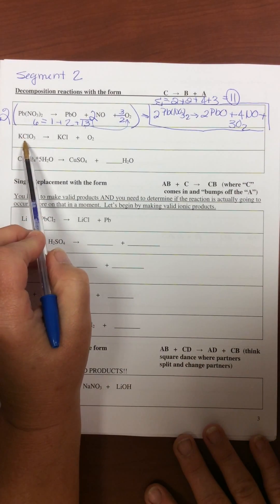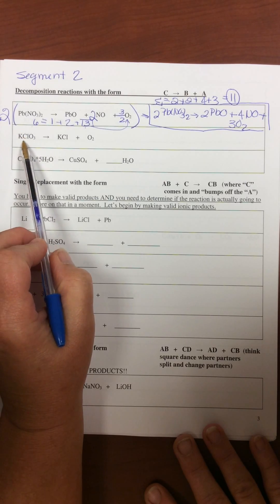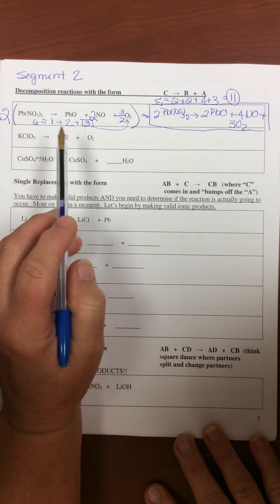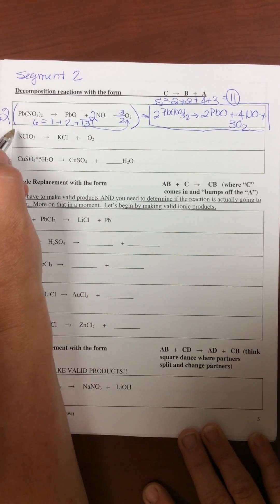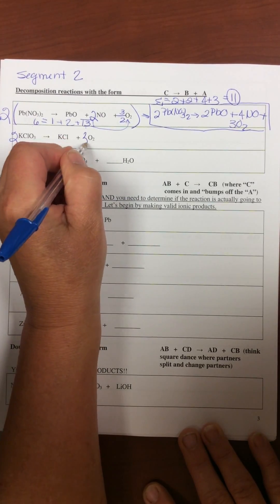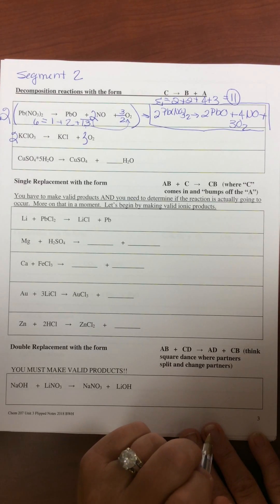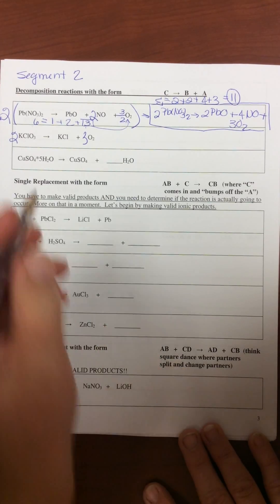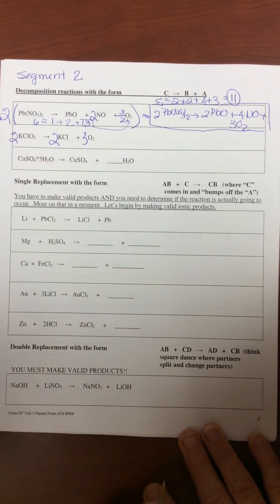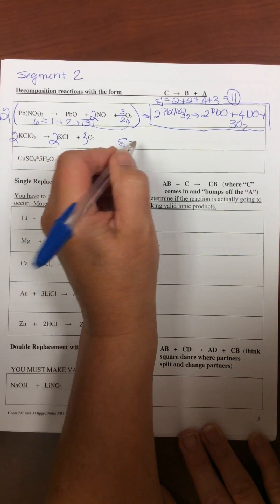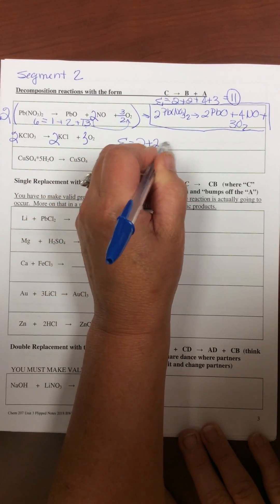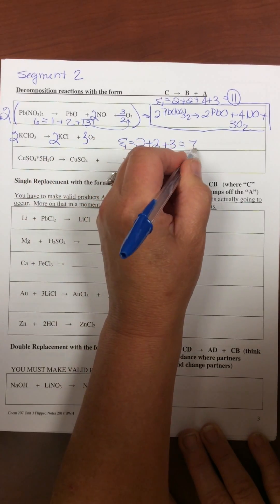This one, again, decomposition, you start with one thing, you end with more. Always when you see a three and a two is your clue that you should strive for six. Two here, three there, fixes the oxygens, which would mean you would put a two on the potassium chloride. Sum of the stoichiometric coefficients, two plus two plus three equals seven.